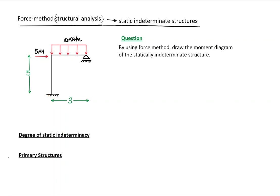We know that at this support we have three reaction forces, and for this other support we also have just one reaction force. The degree of static indeterminacy is found by summing up the reaction forces — that's four reactions — minus the number of equilibrium equations, which is three. So we have just one degree of static indeterminacy.